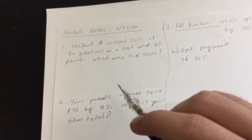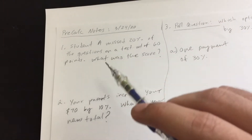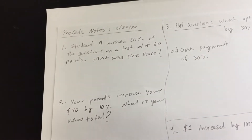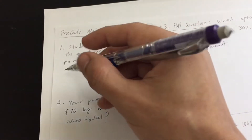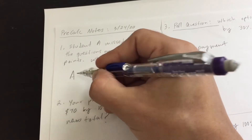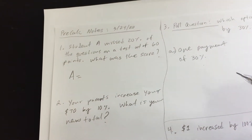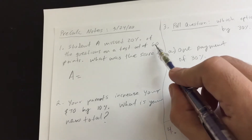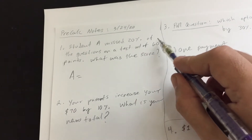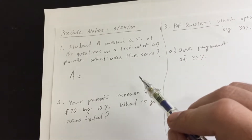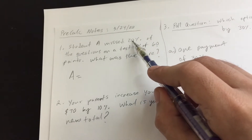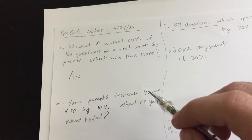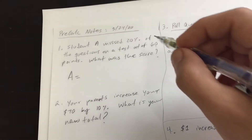Number one: Student A missed 20% of the questions on a test out of 60 points. What was the student's score? I'll call it 'A' for student A. Think — what's 100% of the test score? It's represented by 60. But how much of that 100% did we miss? 20%. So if we miss 20% out of 100, how much remains? Eighty percent.